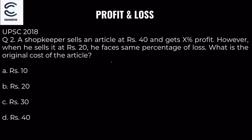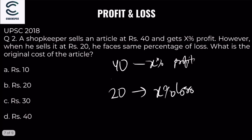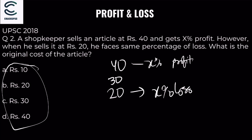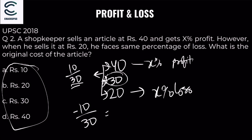There's also a shortcut: when the same percentage x is both profit and loss on the same item, the cost price is the average of the two selling prices. So (40 + 20) / 2 = 30. The difference divided by cost price gives the percentage: 20 / 30 × 100 = 33.33%.